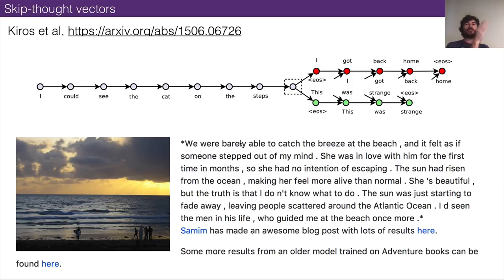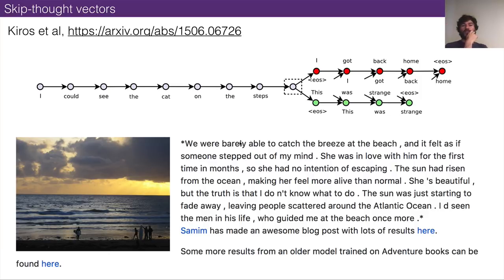The next stage was modeling language at the word level rather than the character level. That was the basis for skip-thought vectors — work by Jamie Kiros around 2016, using word vectors as the basic units to model language, embedding those word vectors, and then using those to produce sequences of words that seem to make more sense. This showed text conditioned on images, where the text is made in response to an image — for example, feeding it an image of a beach and it generates romantic prose. This was trained on romance novels.